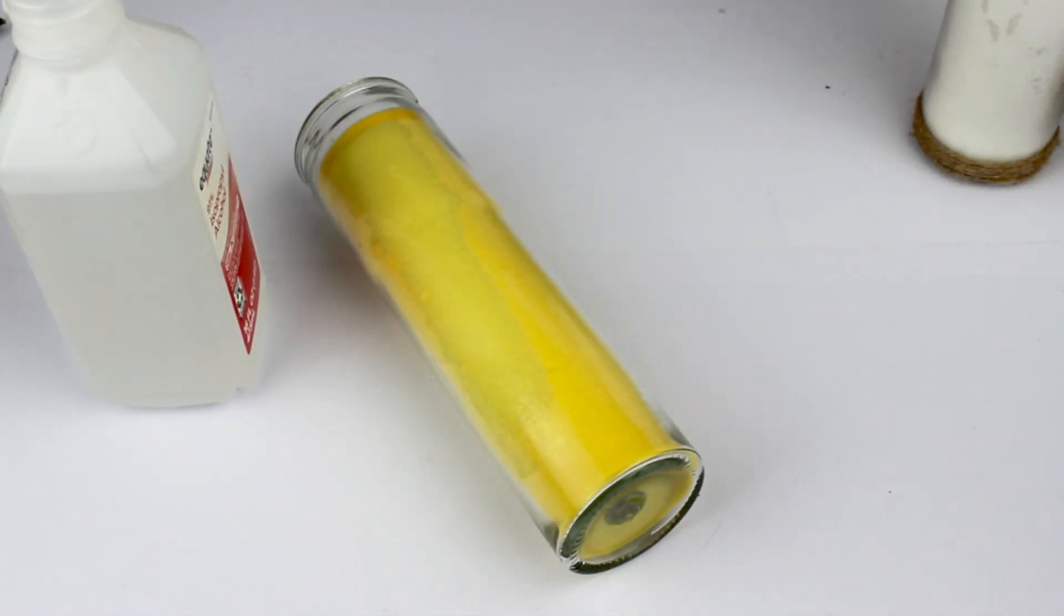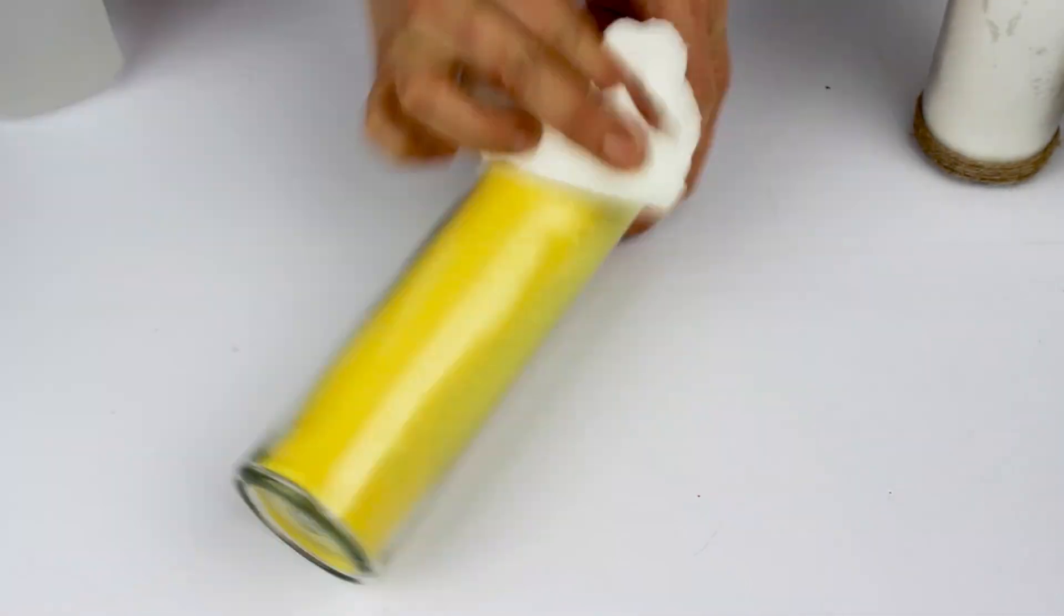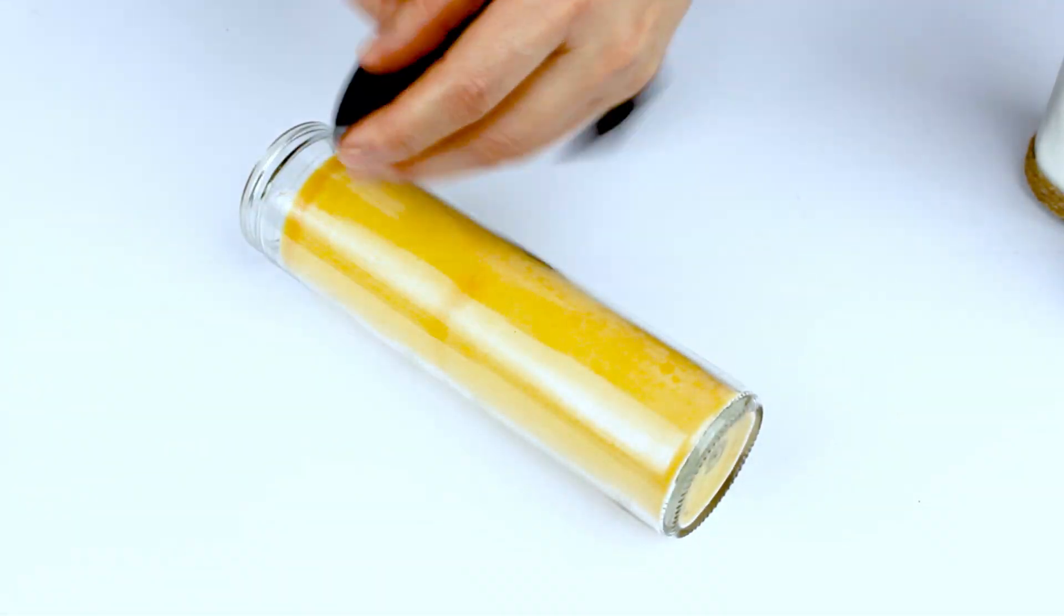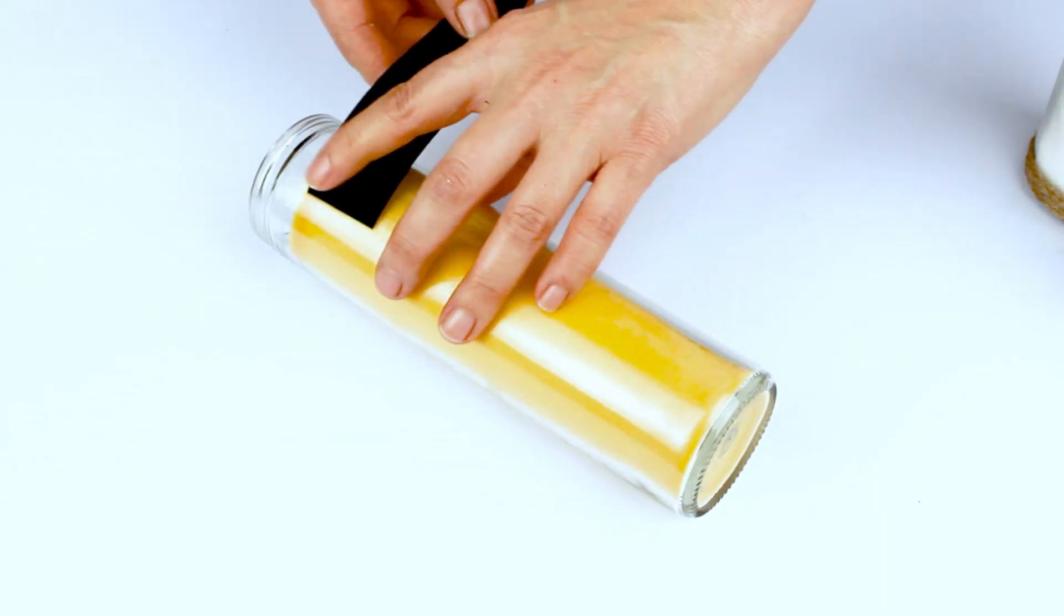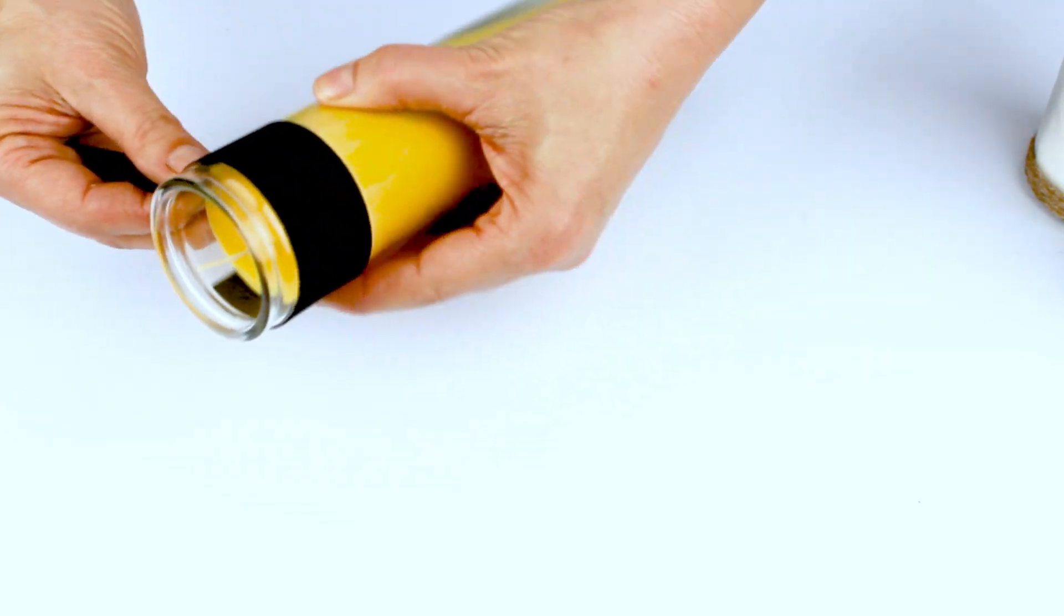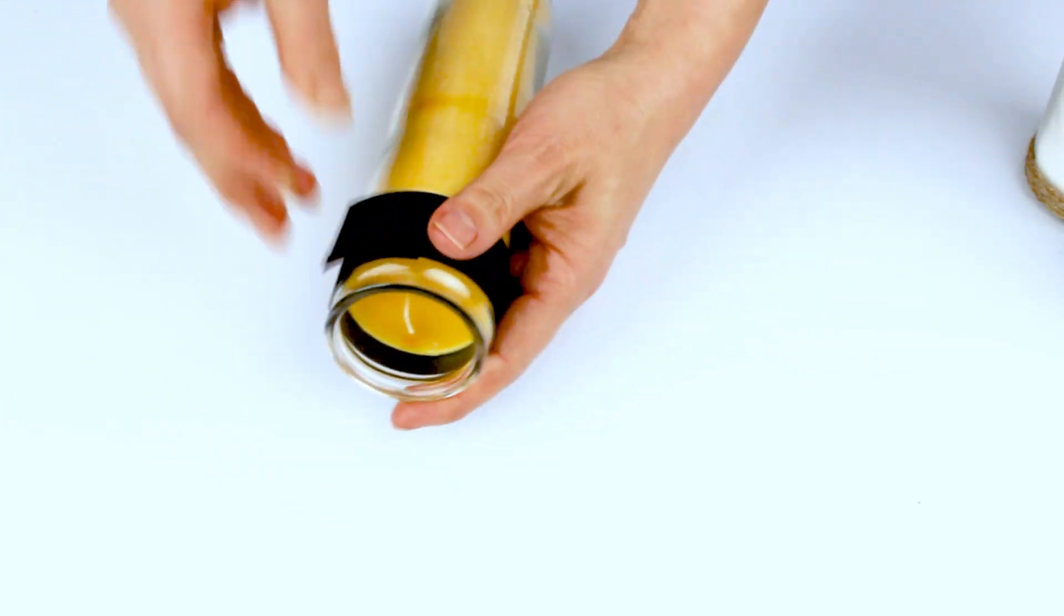After that and before applying the vinyl, we're going to clean with a paper towel and alcohol. Now it's time to decorate them. I'm going to use ribbon, jute twine, a few leaves and flowers, but you may use the materials of your choice.